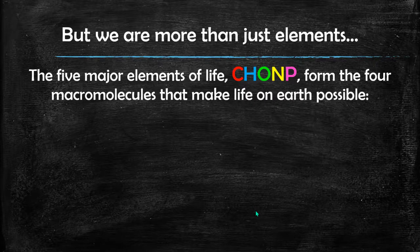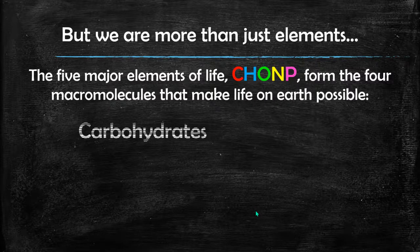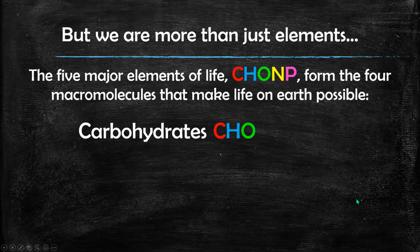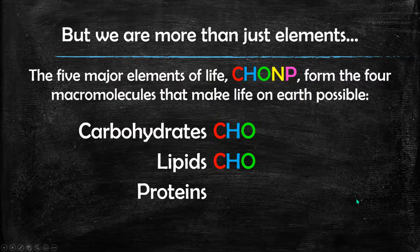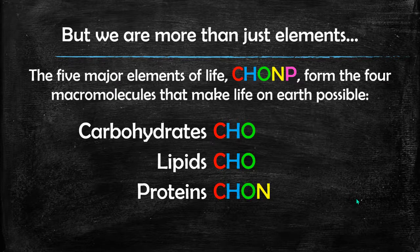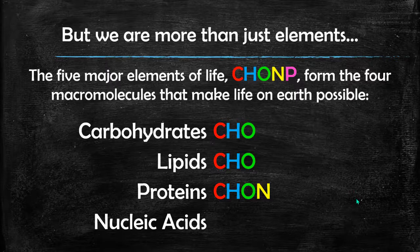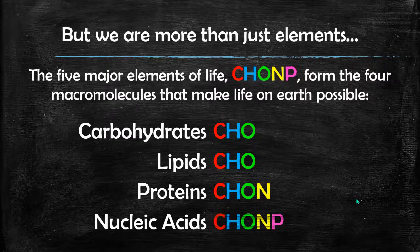But not all the macromolecules have all five. Carbohydrates are made out of carbon, hydrogen, and oxygen. Lipids are made out of carbon, hydrogen, and oxygen. Proteins are made of carbon, hydrogen, oxygen, and nitrogen. And then it's our nucleic acids that are made of all five: carbon, hydrogen, oxygen, nitrogen, and phosphorus.